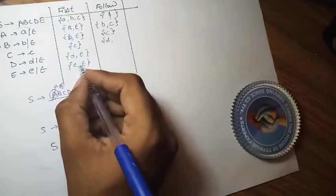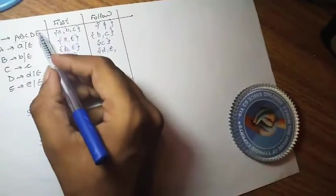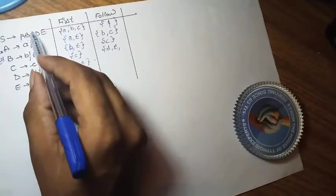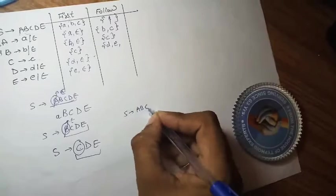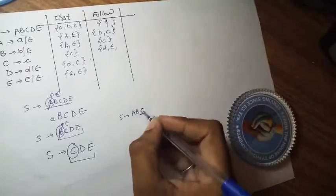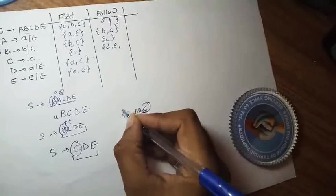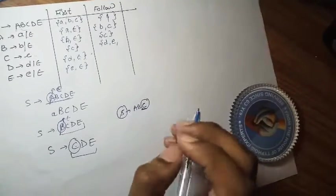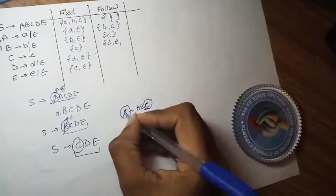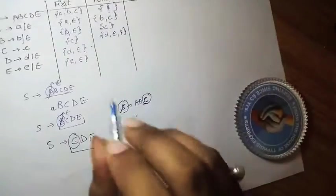Continuing FOLLOW(C): FIRST(E) = {e, ε}. Since epsilon is in FIRST(E), E can also vanish, and C ends up at the corner of the production — meaning C is at the end of the string A B C D E. By the rule, when a non-terminal is at the end of a production, the FOLLOW of that non-terminal inherits the FOLLOW of the left-hand side symbol S. FOLLOW(S) = {$}, so we add dollar to FOLLOW(C). Therefore FOLLOW(C) = {d, e, $}.